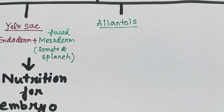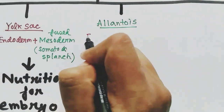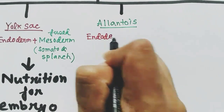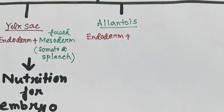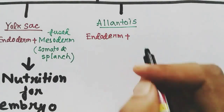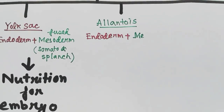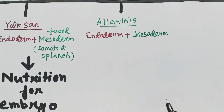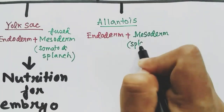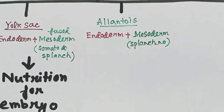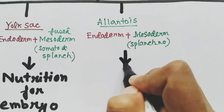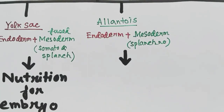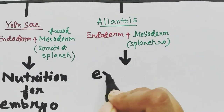Next, the allantois: it has endoderm and splanchnopleuric mesoderm. It stores the excretory products of the embryo.